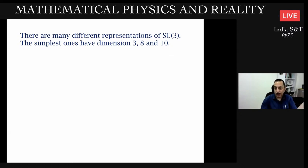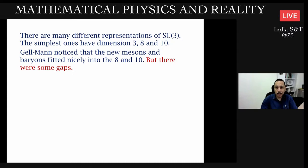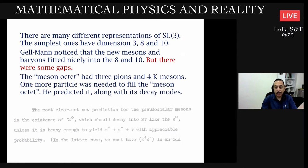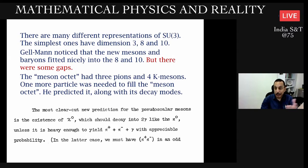If you had 7 or 4 particles that had similar properties, you could not use SU(3) to classify them. They had to fit exactly these numbers. Gell-Mann noticed that the new mesons and baryons fitted nicely into the 8 and 10 representations, but with some gaps. In particular, one set of mesons had 7 particles accounted for, but to fit into this hexagon we need 8 particles. One of the dots didn't exist. He said one more particle is needed to fill this octet, and he predicted it with its decay modes.